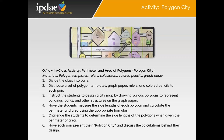Our next activity is the Polygon City. The Polygon City activity is a fun and interactive way to teach students about the perimeter and area of polygons. By designing their own city maps, students will be able to apply geometric concepts in a creative context. You'll begin by dividing the class into pairs and gathering the necessary materials, which include polygon templates, graph paper, rulers, calculators, and colored pencils.